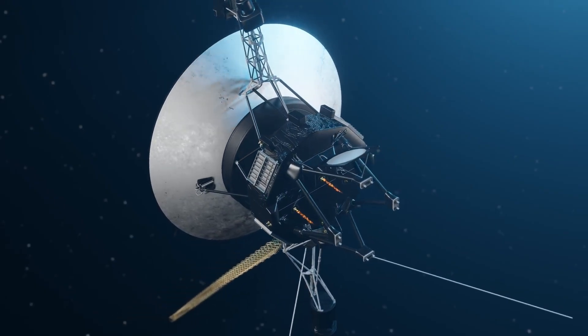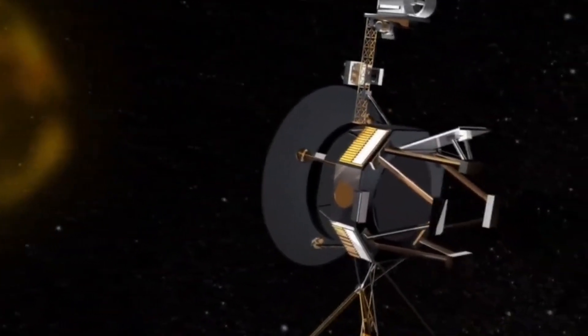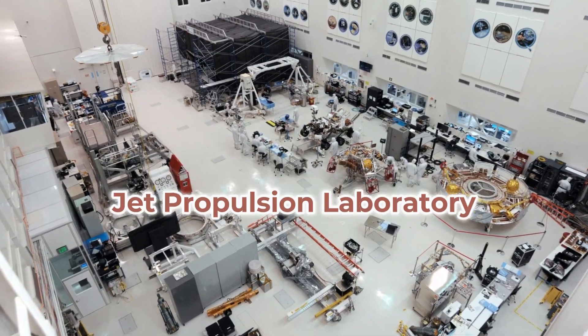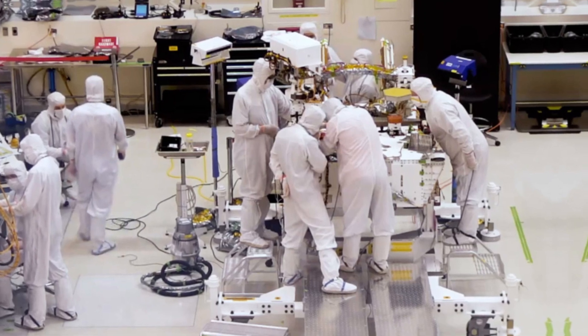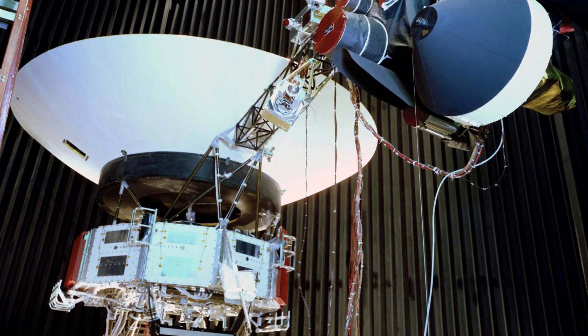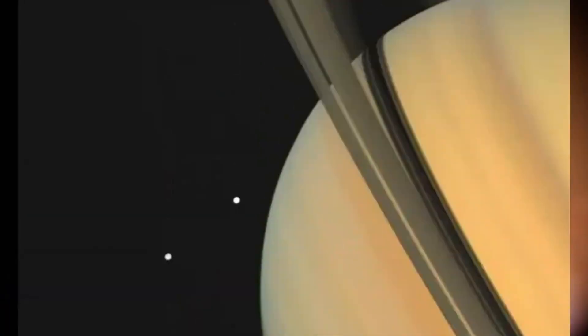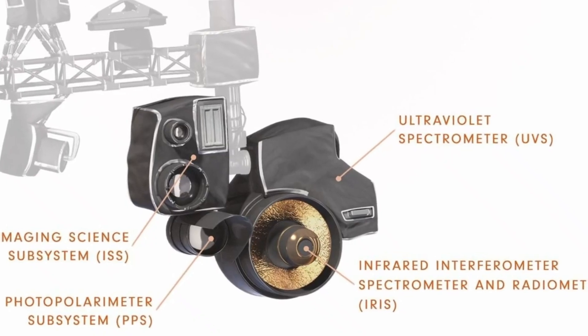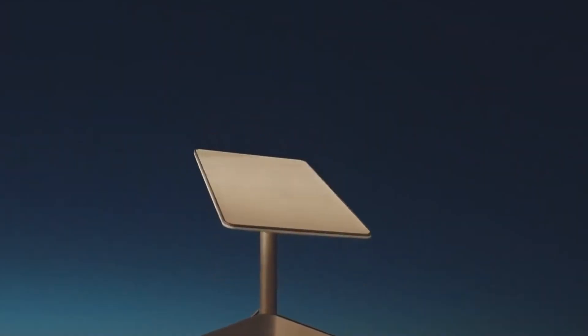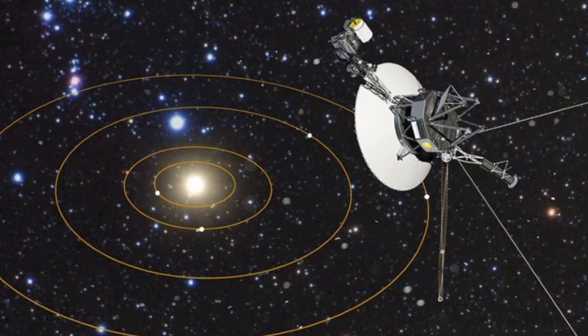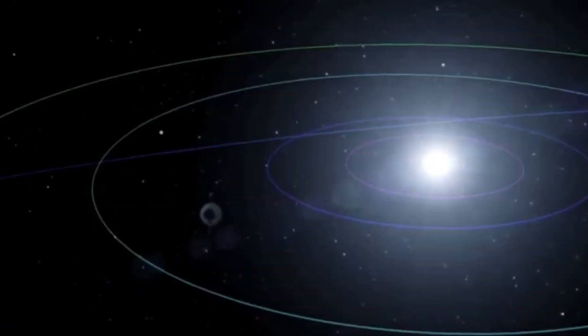Updating Voyager's software from over 15 billion miles away is a feat of both technological prowess and precise timing. Engineers at NASA's Jet Propulsion Laboratory, JPL, meticulously choreographed these updates considering factors such as Voyager's exact position relative to Earth, the alignment of our planet's antennas and the timing of the transmission. The process begins with painstaking preparation on Earth, where the new software package is rigorously tested and tailored to ensure compatibility with Voyager's aging hardware.